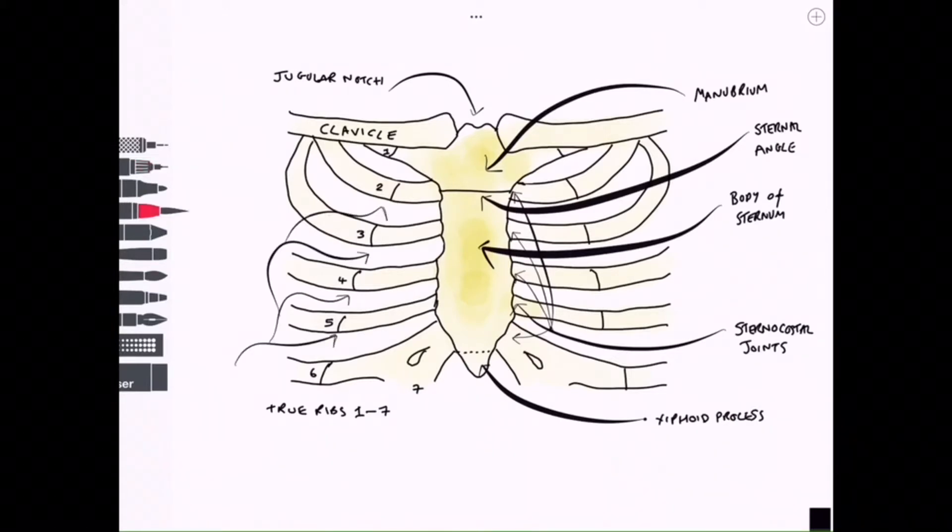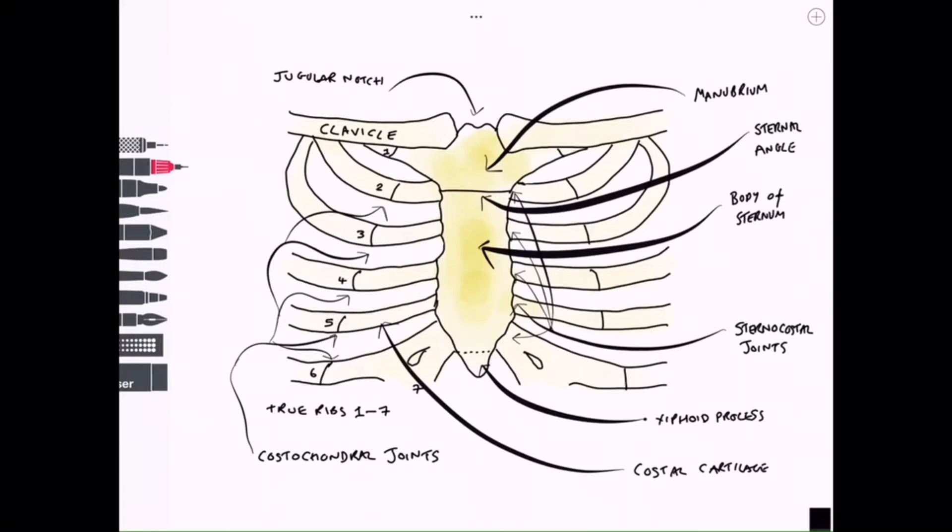Next we have joints which are known as the costochondral joints, sometimes referred to as interchondrial joints. These occur between costal cartilages and adjacent ribs. Finally we need to label on the costal cartilage.